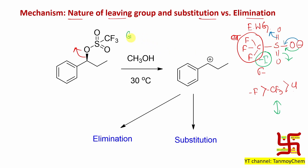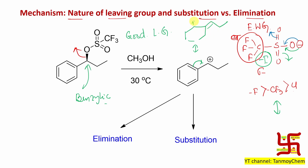Consequently, trifluoromethane sulfonate is a good leaving group, so a carbocation is produced. This position is also unique — it is benzylic, and benzylic carbocations are resonance-stabilized by participation of the aromatic double bond. I am drawing one canonical form; please draw the rest yourself. The positive charge deocalizes around the ring. So: point one — very good leaving group; point two — stable benzylic carbocation, produced very easily.